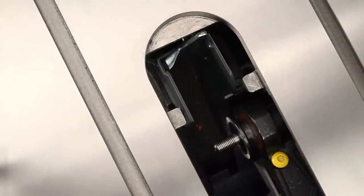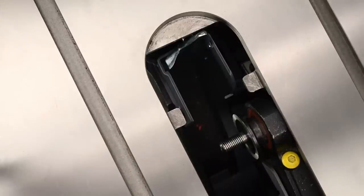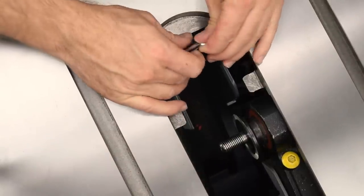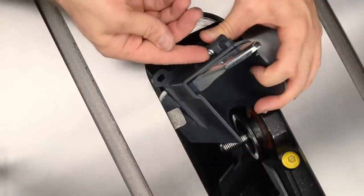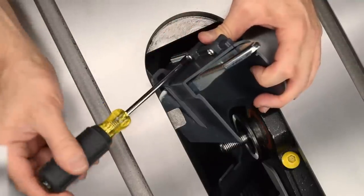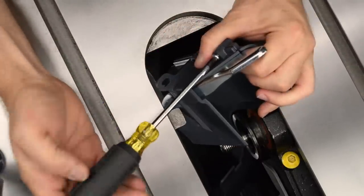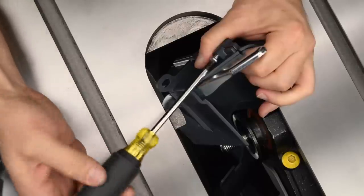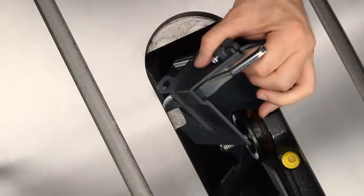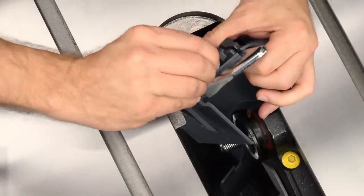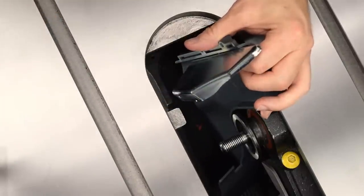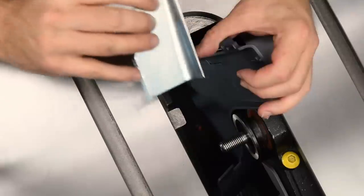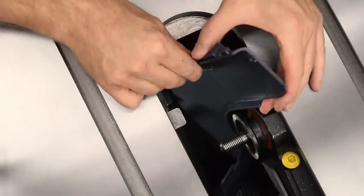Raise the arbor. Carefully lift and slightly turn the dust shroud until you can access the two screws. Remove the two screws to disassemble the dust shroud. Carefully remove the main piece of the dust shroud.